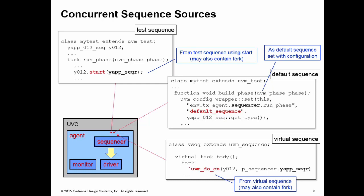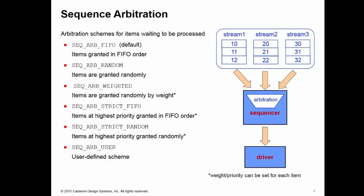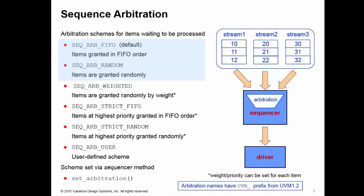Given all this information, how does the sequencer decide which item to send next down to the driver? It has a built-in arbitration mechanism that allows it to select between all the items which are currently waiting to be processed. The arbitration mechanism is set using the sequencer method set_arbitration. There's various arbitration methods. In this training byte, we'll have a look at the first two, the FIFO and the random. Notice from UVM 1.2, these arbitration names are prefixed with UVM underscore just for syntactic consistency.